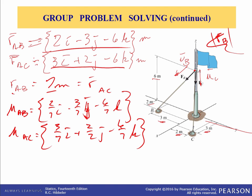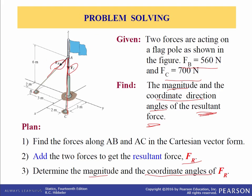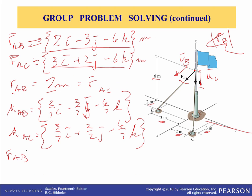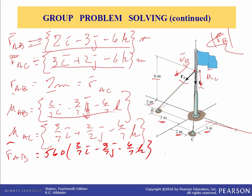Now we can write our two forces F_AB and F_AC in Cartesian form. F_AB vector equals the magnitude F_B, which is 560 Newtons, times the unit vector AB — which is (2/7)i minus (3/7)j minus (6/7)k. This is in Newtons. Doing the multiplication we get 160i minus 240j minus 480k Newtons.